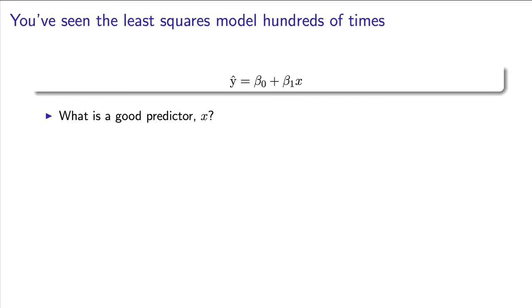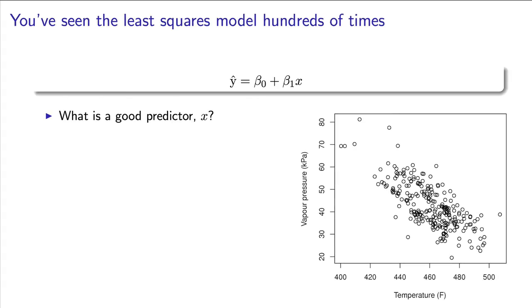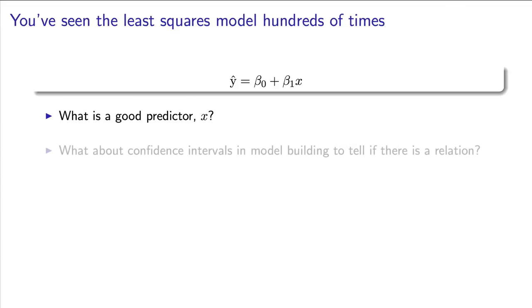Now you've done this so many times that you probably haven't given it too much thought. But that already assumes that you've got a good x predictor for y. How did you know that before building the model? Most likely, you used a scatter plot to see if there was a worthwhile relationship. But did you know that you can use a confidence interval to provide a similar judgment?